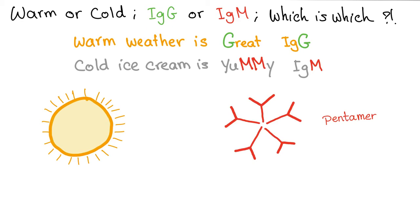How do you remember which antibody is warm and which is cold — IgG or IgM? Some students use the mnemonic: warm weather is great, warm IgG; cold ice cream is yummy, so IgM is cold. But that's problematic because cold ice cream can also be great, so you probably won't remember it during an exam.